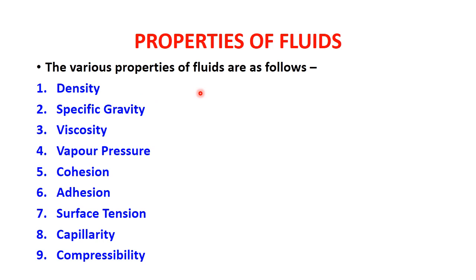The various properties of fluids are as follows: first is density, second is specific gravity, third is viscosity, fourth is vapor pressure, fifth is cohesion, sixth is adhesion, seventh is surface tension, eighth is capillarity, and ninth is compressibility. These nine are the major properties of fluids.